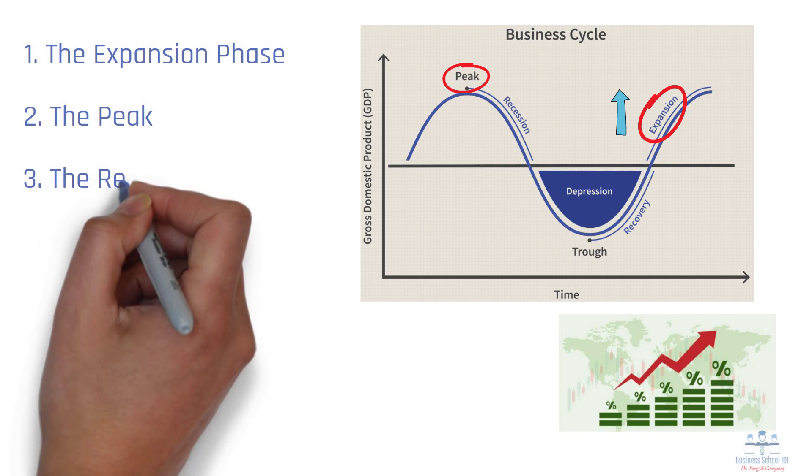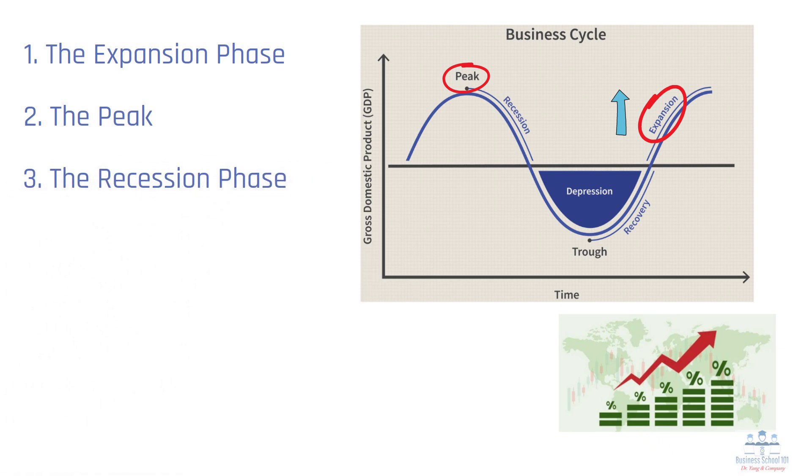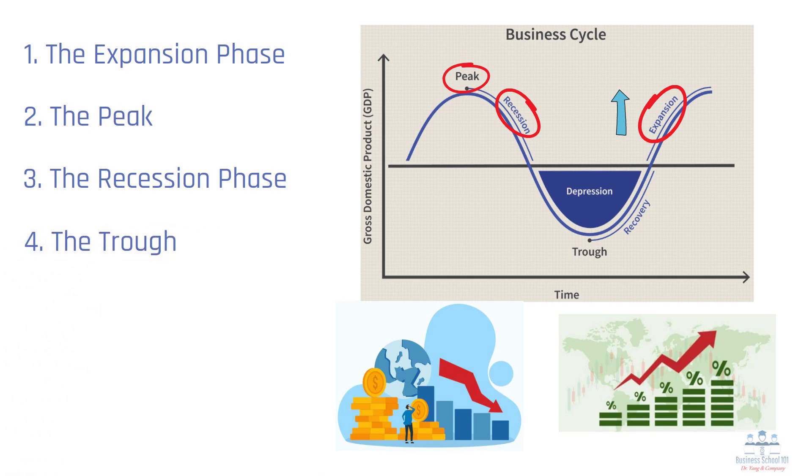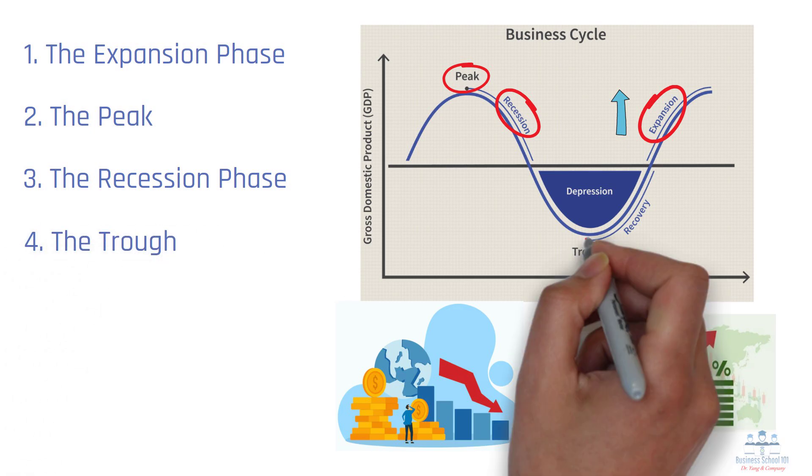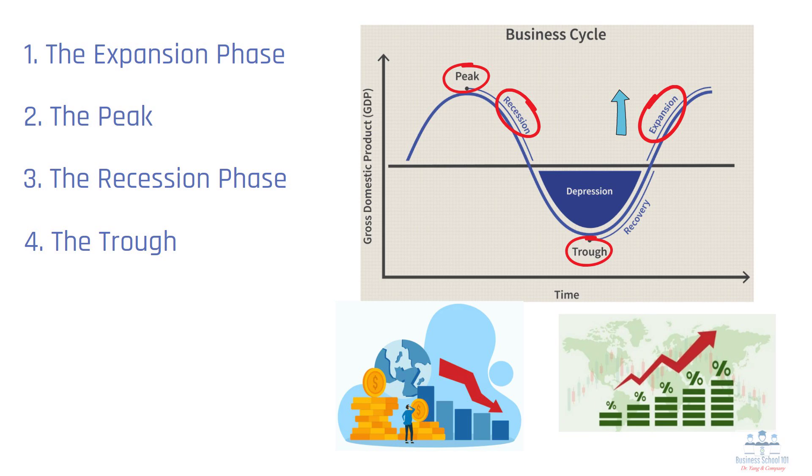Number 3: The recession phase. After the peak, we enter the recession. Production falls, unemployment rises, and incomes decline. It's the economic winter, if you will. Number 4: The trough. This is the bottom of the cycle, but also where hope begins. After hitting the trough, the economy starts expanding again, beginning a new cycle.